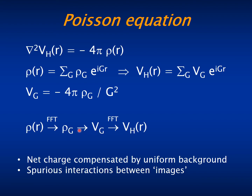This has some consequences. First, if the total charge is not zero, that is if the system is charged, then the Fourier coefficient for G equals zero is not zero and V_G becomes infinite. It simply reflects that the potential will be infinite for an infinite repetition of charges. So what SIESTA does is to compensate the net charge by a uniform background of compensating charge.